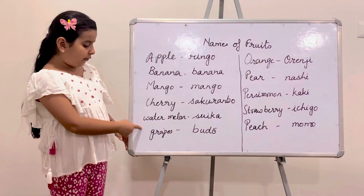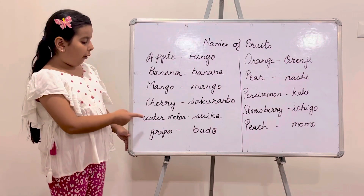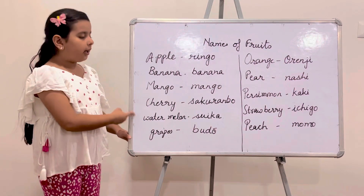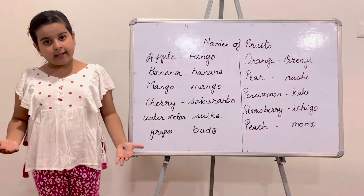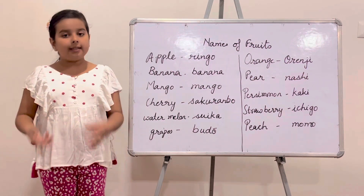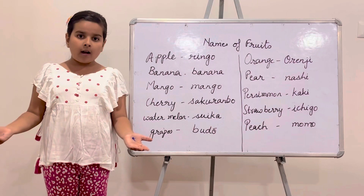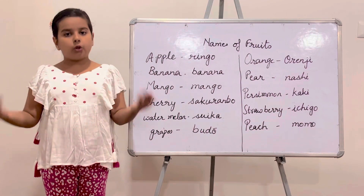The next fruit is Watermelon. Watermelon is known as Suica. Suica.